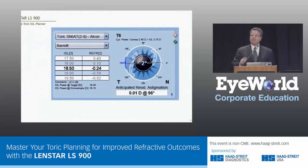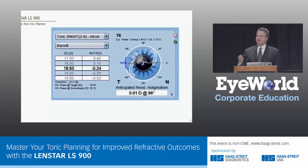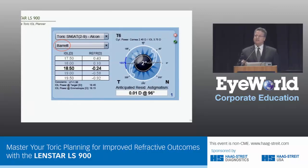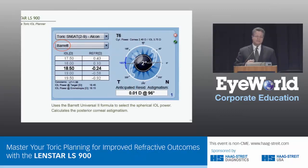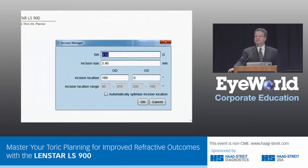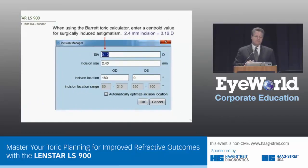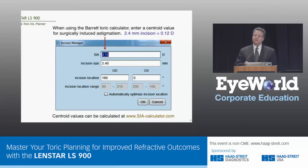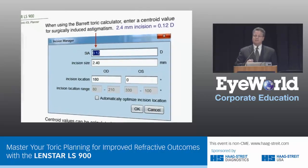Just a couple other quick things. Dr. Barrett is going to talk about his Toric method. The iSuite Toric IOL planner — a separate piece of software you can add on — gives you the Barrett formula, the Barrett calculator, which adds the posterior cornea and allows that calculator to use a third vector for the calculation of the orientation of the steep meridian. This is what I use in my own practice and it works very, very nicely — it's becoming a standard. For the Barrett calculator, we use a surgically induced astigmatism value that's a centroid value of 0.12. You can go online — there's a tool for calculating surgically induced astigmatism that will give a median, a mean, and also a centroid value at siacalculator.com, so you can come up with this value yourself.